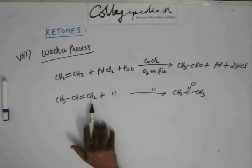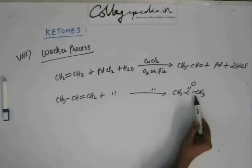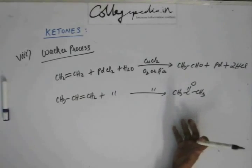So the product will not be propanal, the product will be propanone. C double bond O will not appear on terminal carbon, so it won't be propanal, it won't be aldehyde, it's a ketone, it's propanone.